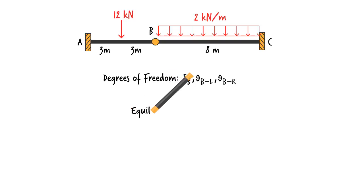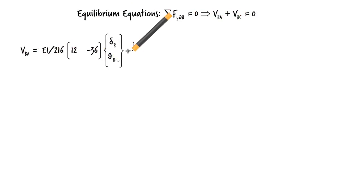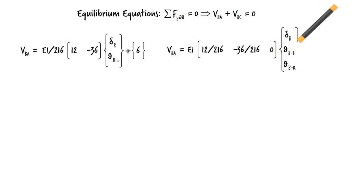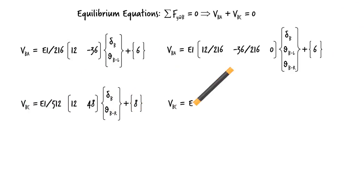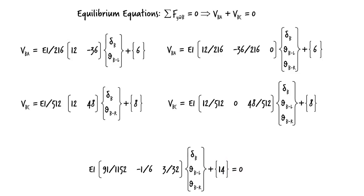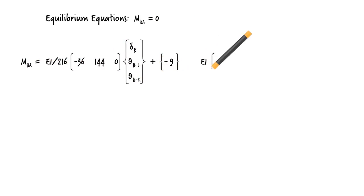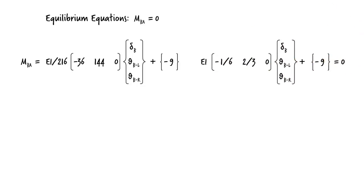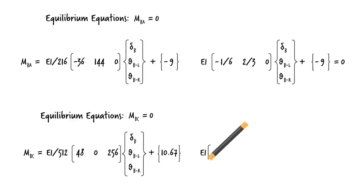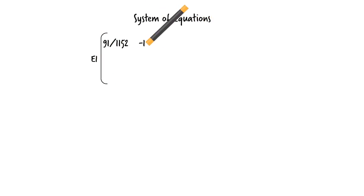To find the unknowns, we need three equilibrium equations. Here they are. We can write the first equation in expanded form, like this. And the second and third equilibrium equations are shown. Putting the three equations together, we get the following system of equations.